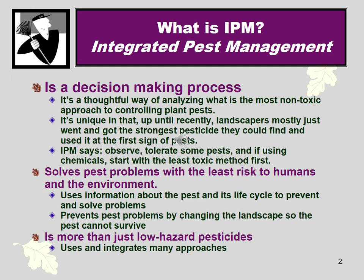Integrated Pest Management is unique and interesting because it isn't just a method of pest control. It's actually a decision-making process. It provides a framework for looking at a pest problem and approaching it with the least toxic approach to begin with, to see if that works. If it doesn't, then slowly increasing to more invasive, usually more toxic management methods. In IPM, we try not to use toxins, and we start off not using them if we don't have to.